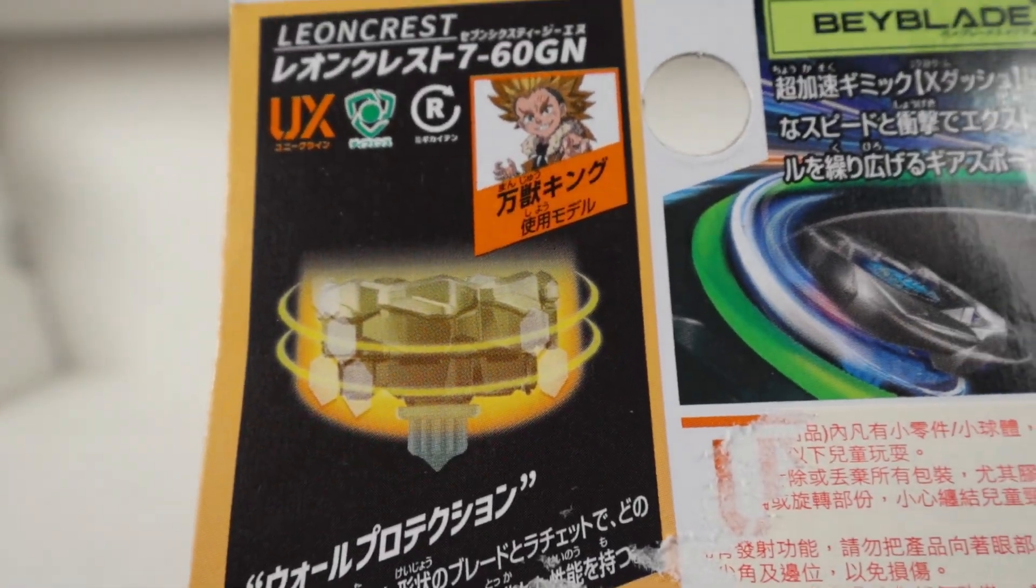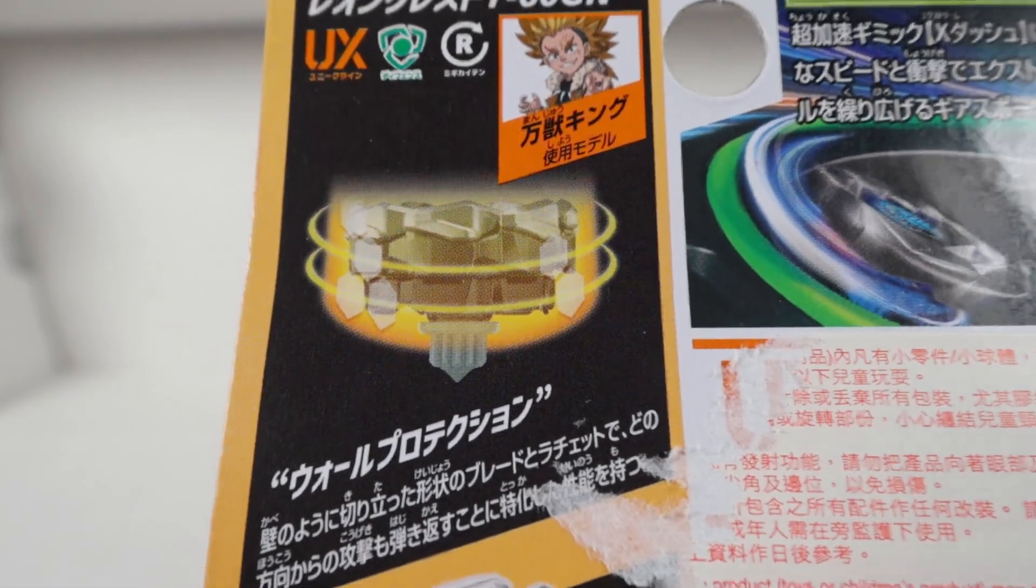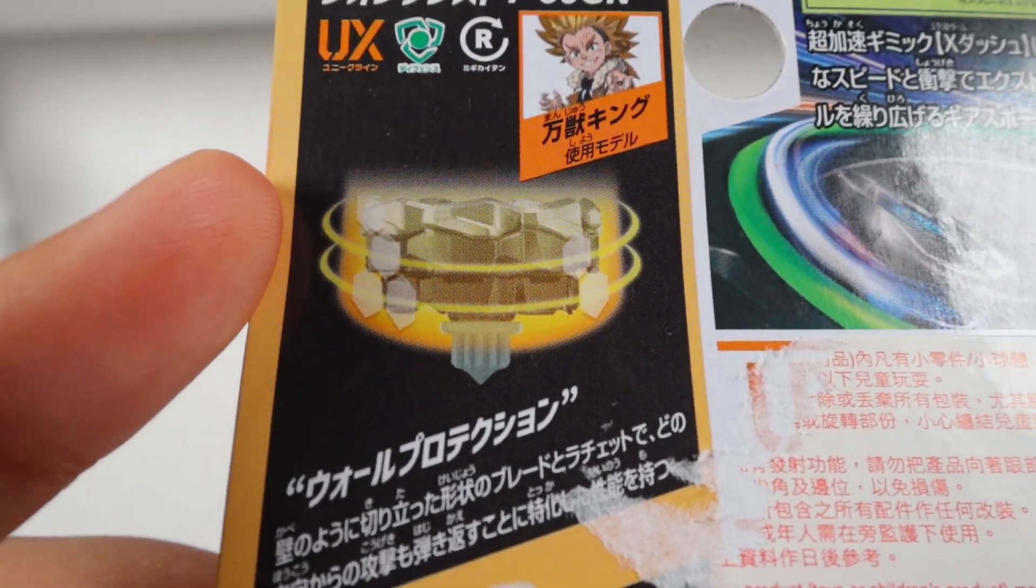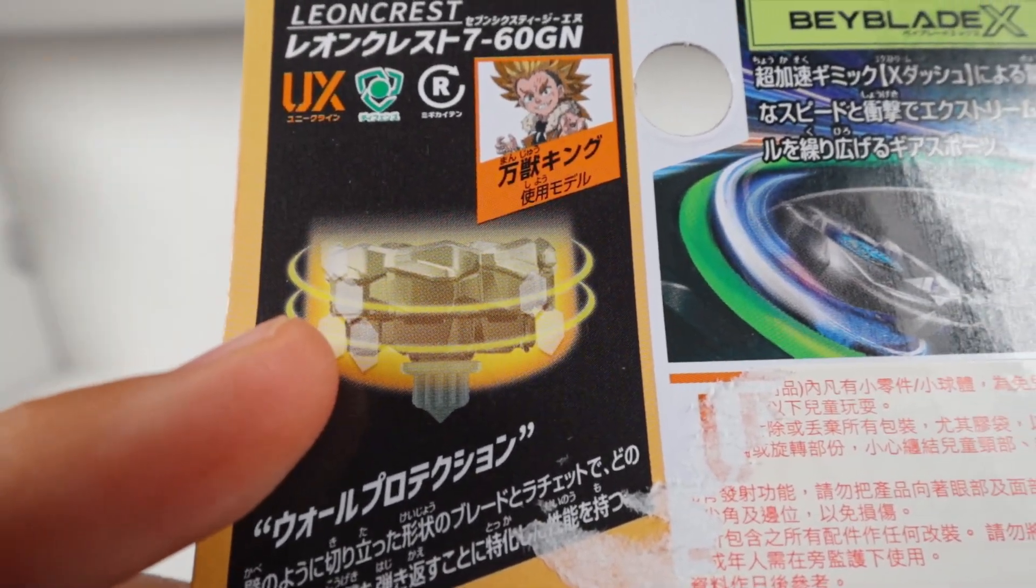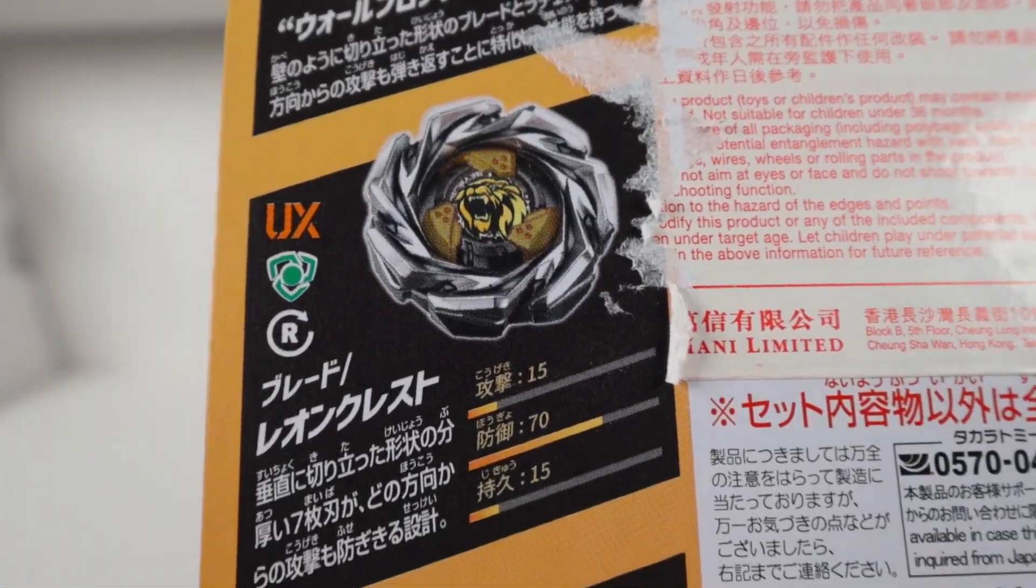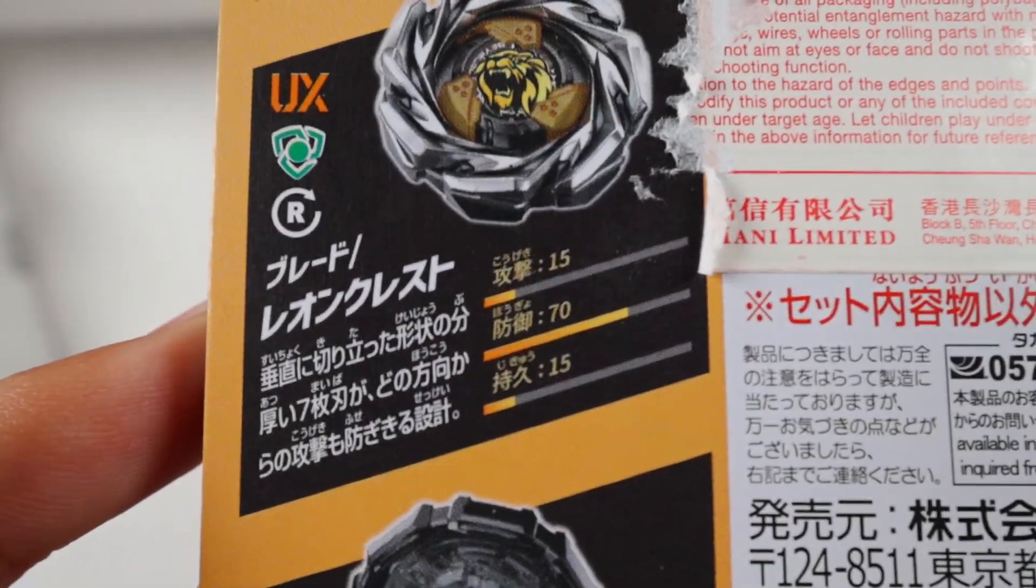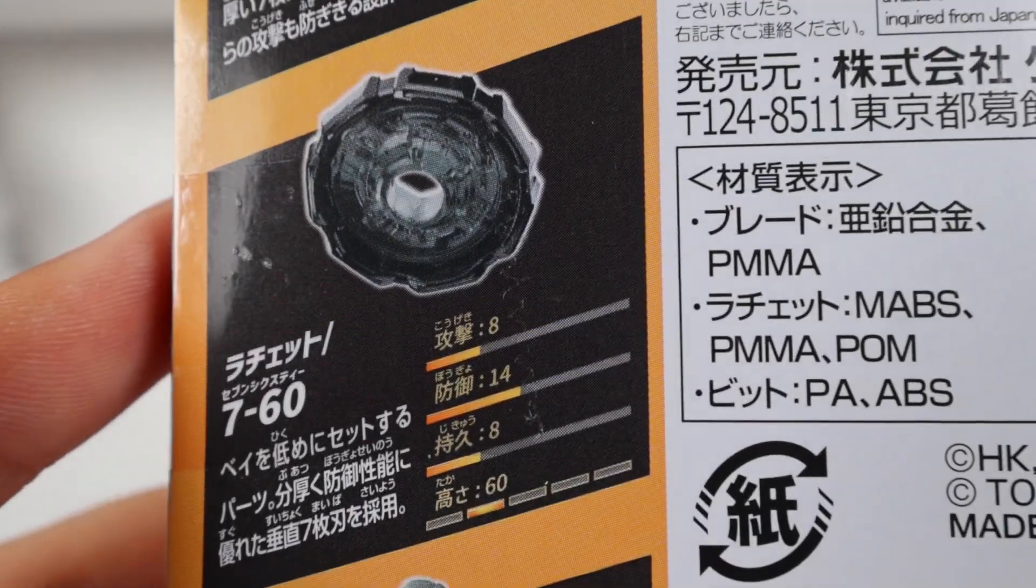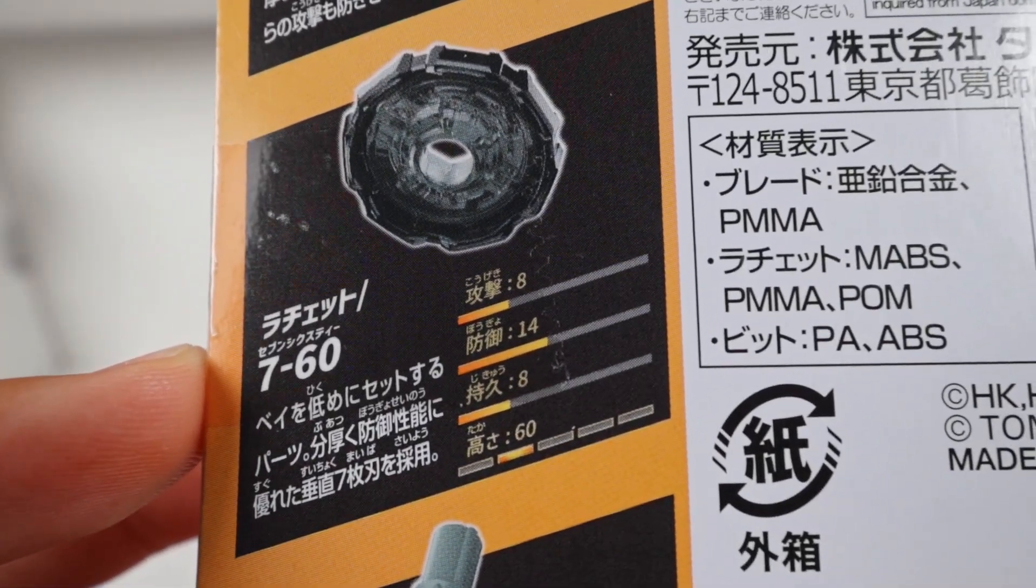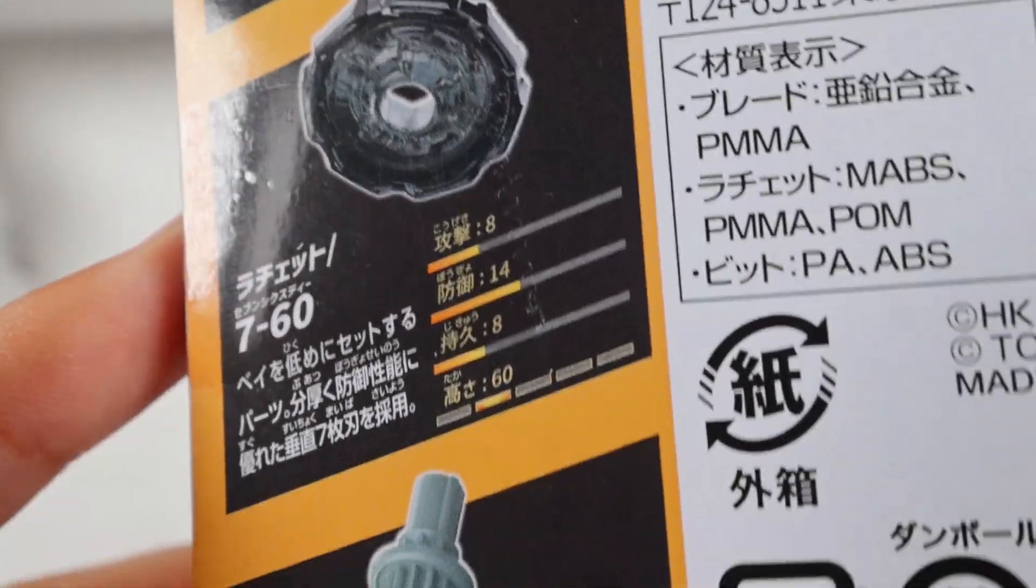So up here describes Leon Crest's brand new gimmick, if you could call it a gimmick, which is supposed to be like absolute defense because the blade here is really thick compared to other Blades, as well as the brand new Ratchet that we'll be looking at the stats for very soon. Here is the Blade, Leon Crest. As you can see, the defense stat is incredibly high compared to Leon Claws. And here's the brand new Ratchet, 760. There's its stats, seems to be more focused to defense if you care about the stats. Seems really rounded, and we'll go more into detail with that.